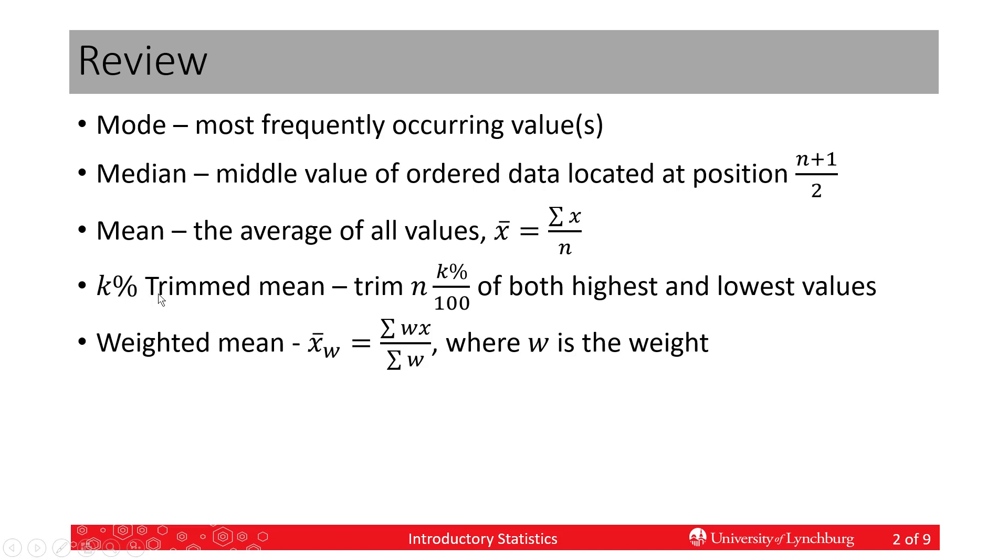A K percent trimmed mean is where we first throw away K percent of the highest values and K percent of the lowest values. Then the values that are left, we add them up and divide by how many are left.